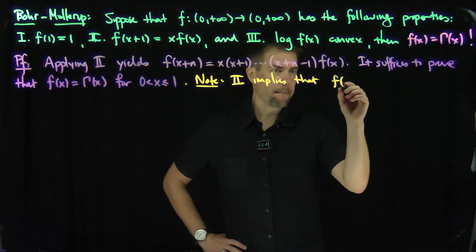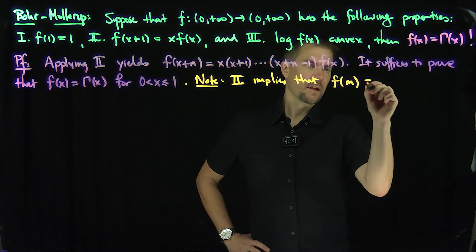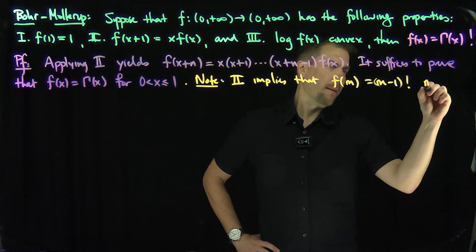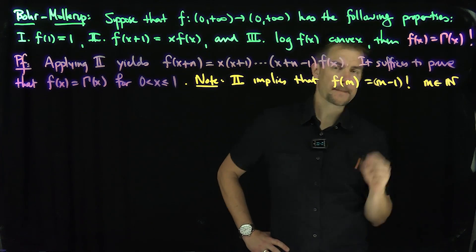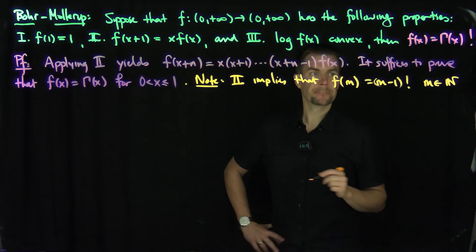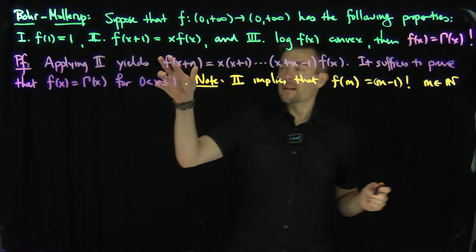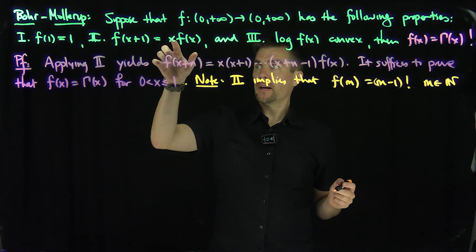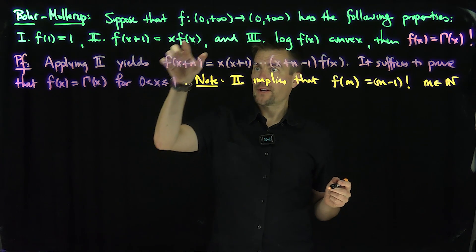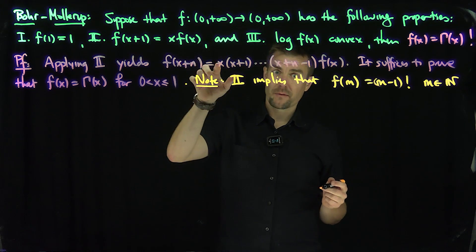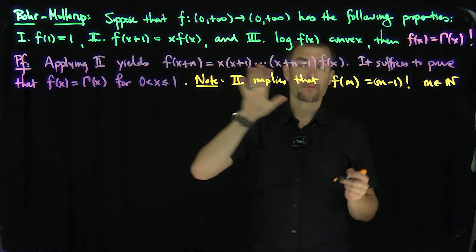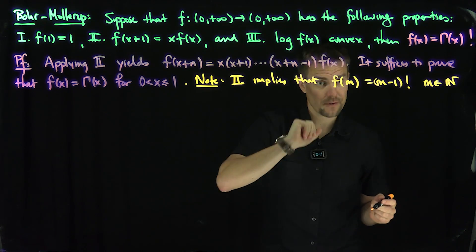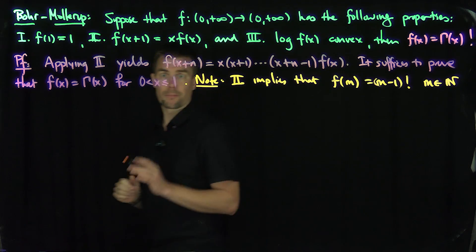Property 2 implies that f(m) = (m−1)! for m in ℕ. This is exactly the factorial property. For example, f(4) = 3·f(2) = 3·2·f(1) = 3! So property 2 implies that on the natural numbers, this function is the factorial function. That's going to be important.